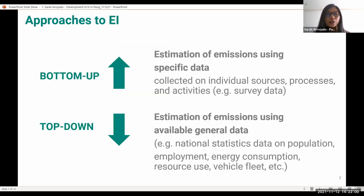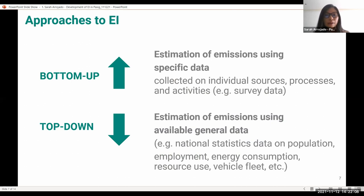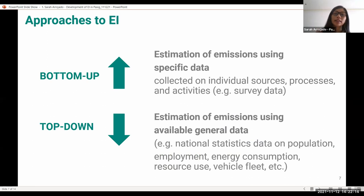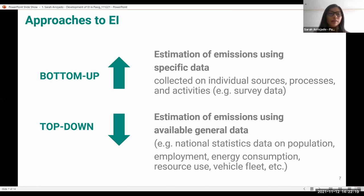There are two approaches to the emissions inventory: the bottom-up and the top-down approach. The bottom-up approach uses specific data, while the top-down approach uses available general data. For Pasig, we focus on the bottom-up approach first, dealing with the mobile sources of data.